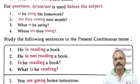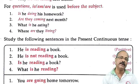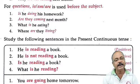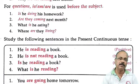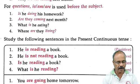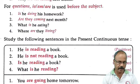For questions, we should use AM/IS/ARE before the subject. For example: 'Is he doing his homework?' 'Are they coming next month?' The helping verb should be used in the beginning of the sentence. 'What is he eating?' 'Where are they living?'